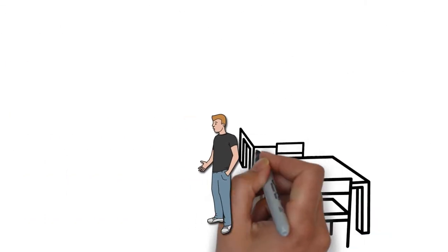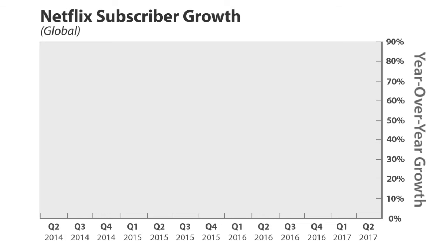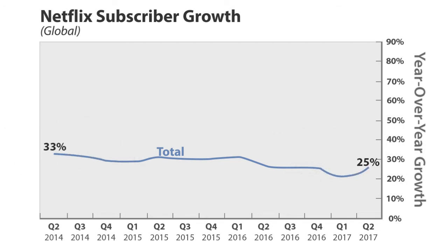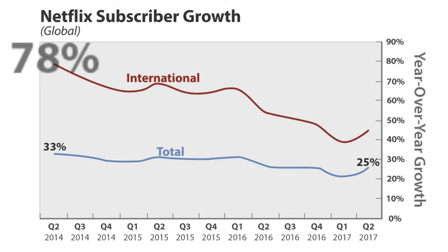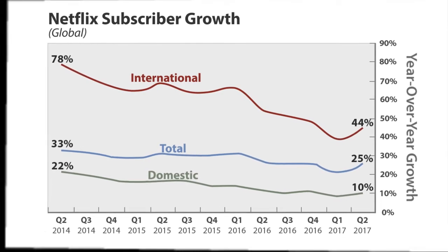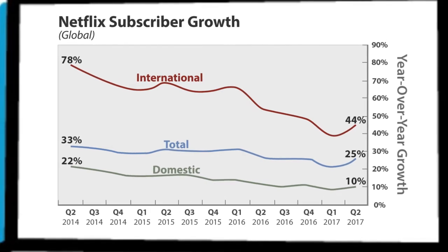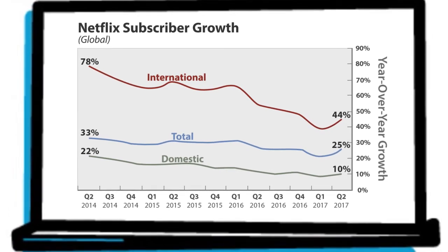Here's how it all sounds put together. This graph represents percentage growth in Netflix subscribers over quarters and years. From 2014 to 2017, total growth has declined slightly from 33% to 25% over the past three years. It appears that international growth has slowed the most, from 78% to 44%, whereas domestic growth slowed by only 12%. However, the growth rate is still positive in all markets, which indicates that Netflix continues to grow every quarter, and in fact the growth rate saw a slight increase in the second quarter of 2017.